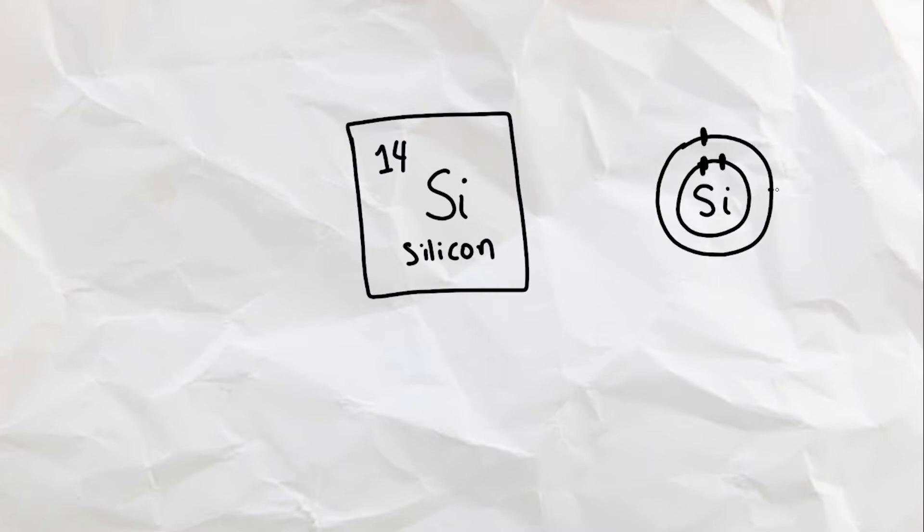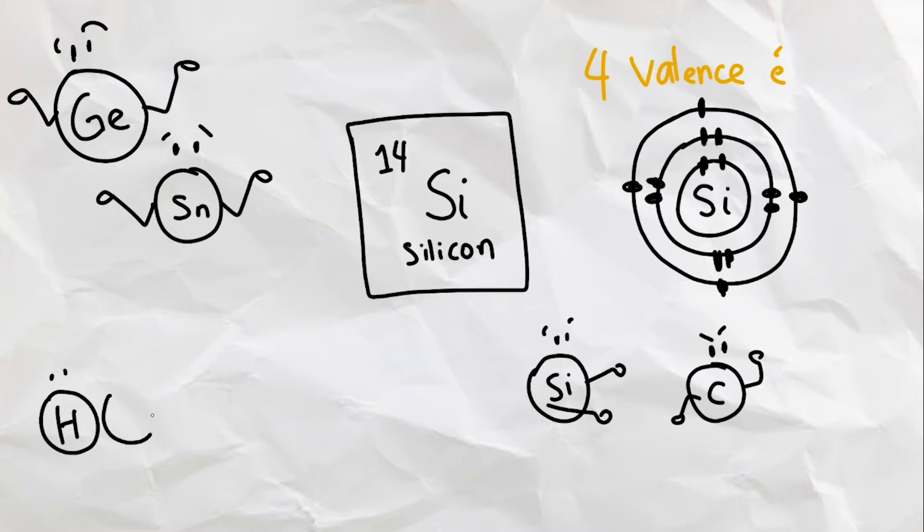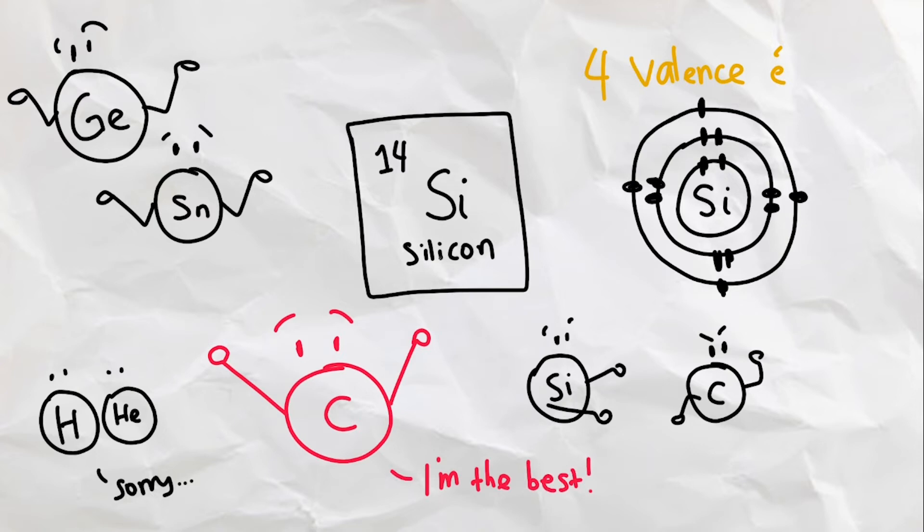But what about other elements? Silicon, despite having four valence electrons, can't form stable bonds like carbon. Other potential elements aren't abundant enough to form life in the first place, and the more abundant elements such as hydrogen and helium don't have the properties of being able to form stable bonds like carbon. So it is not an exaggeration to say that without carbon, not a single living thing will be, well, alive.